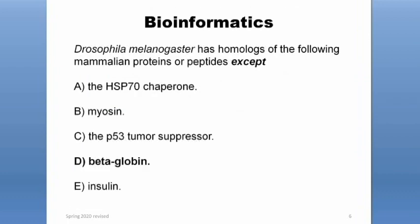Here's a question: Drosophila melanogaster has homologs of the following mammalian proteins or peptides except for — A, heat shock protein 70 chaperone; B, myosin; C, the P53 tumor suppressor; D, beta globin; and E, insulin. The answer is beta globin. The reason is that beta globin is used for carrying oxygen, but because Drosophila melanogaster don't have blood, they don't have RBCs, and therefore they don't have beta globin.